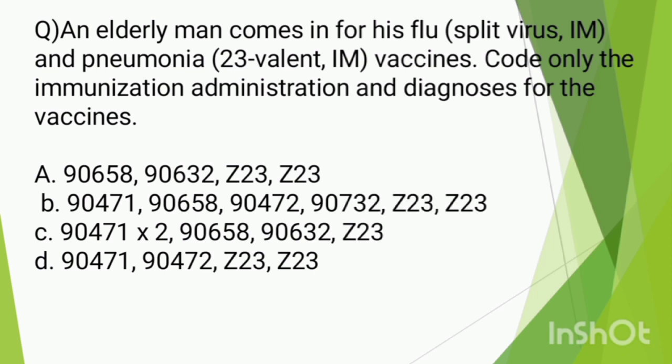We have code 90658 for the flu vaccine and 90632 for the pneumococcal vaccine. For administration, the primary intramuscular route is 90471, and the second vaccine adds 90472. The ICD diagnosis codes are also included. The correct answer is option D.